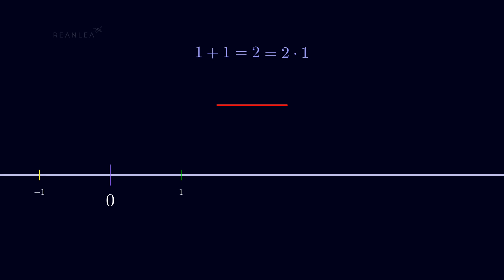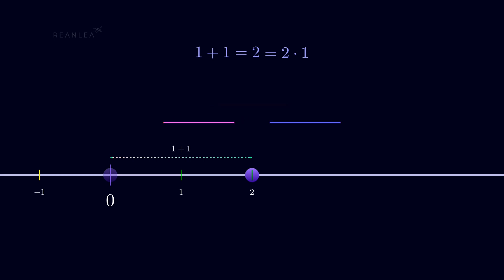We can think of 1 as the position after shifting a ball from the origin by unit length to the right. If we take the same action again, we can represent that position by 2 — we can think of 2 as the successor of 1. That's how 1 plus 1 becomes 2 times 1, and in similar fashion the successor of 2 becomes 3, then 4, 5, and so on. This gives us a rough idea about how Peano's axioms and natural numbers are constructed.